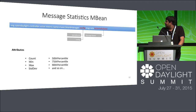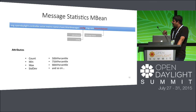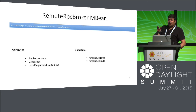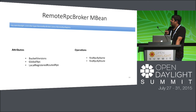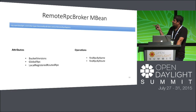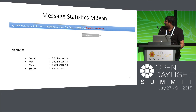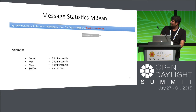We also have beans giving statistics about each and every ACCA message that occurs in the data store, which is common with the RPC side as well. Someone asked about querying the RPC registry — if you go to the remote RPC broker bean, it has operations like find RPC by name or RPC per route, so you can query whether a particular RPC has been registered.